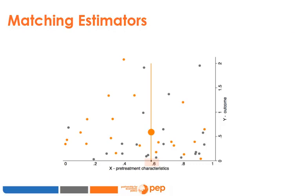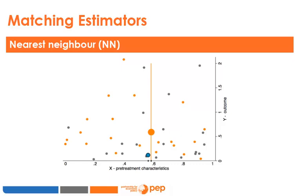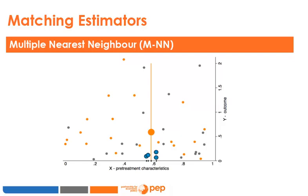The nearest neighbour matching estimator uses the outcome of the nearest unit in terms of x as a counterfactual. If there are several units with equal scores, we take the average of their outcomes. But why only use one neighbour? You could choose to use two, three, four or more neighbours. Multiple nearest neighbour matching is an estimator that enables the calculation of a counterfactual using several neighbours, and in practice this estimate is easy to calculate by adding an option to the nnmatch command.